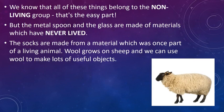All of these things belong to the non-living group. The metal spoon and the glass are made of materials which have never lived. The socks are made from a material which was once part of a living animal — the sheep. We can also use wool to make many useful objects. You can see the sheep in the picture with the wool on its body, and it is that wool we use to make socks, winter coats, and other outfits.